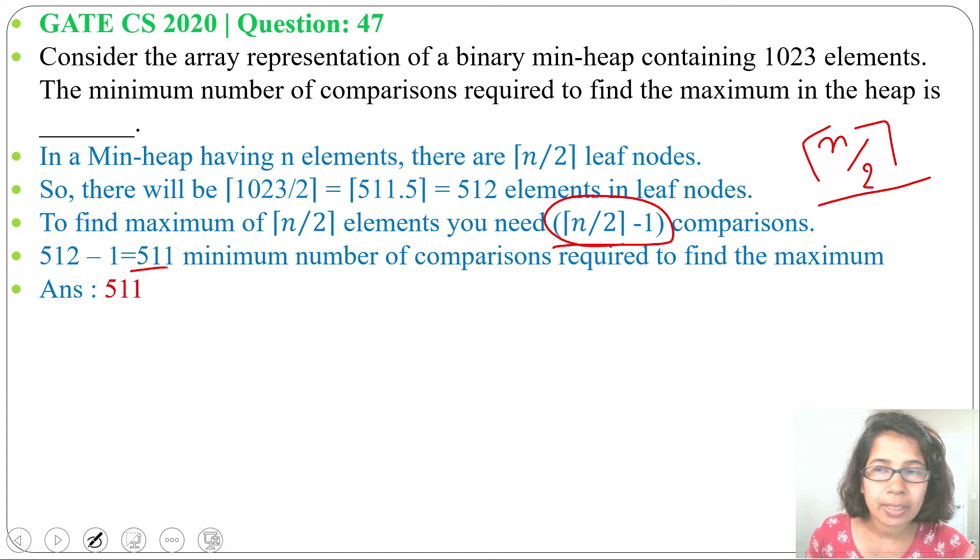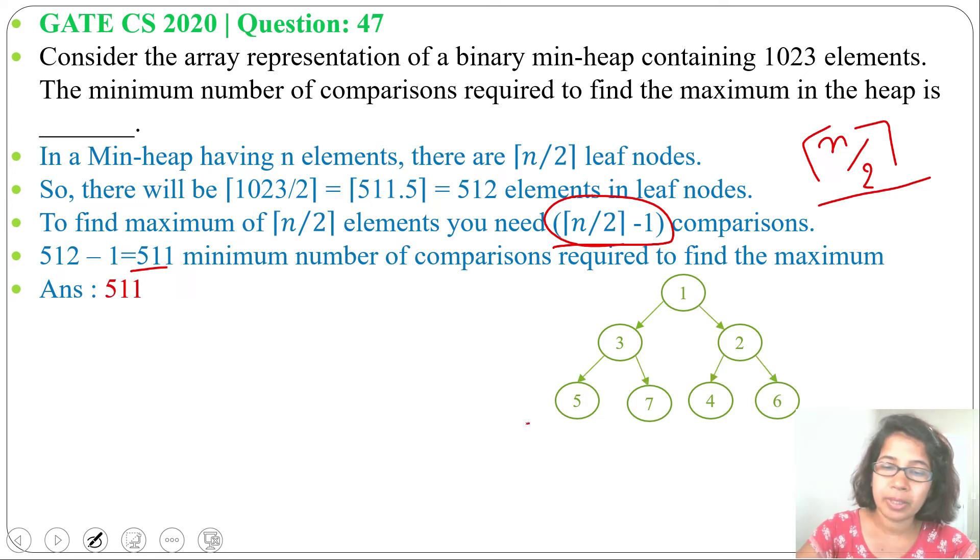Let's take a small example, suppose there are 7 elements. For 7 elements, there will be 4 leaf. It is a complete binary tree, so there will be 4 leaf.